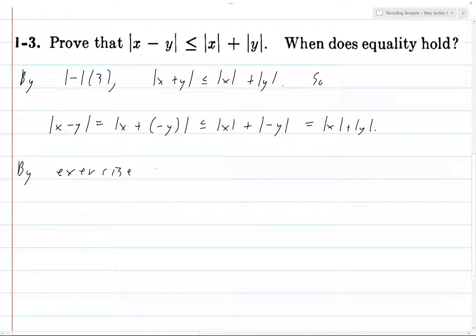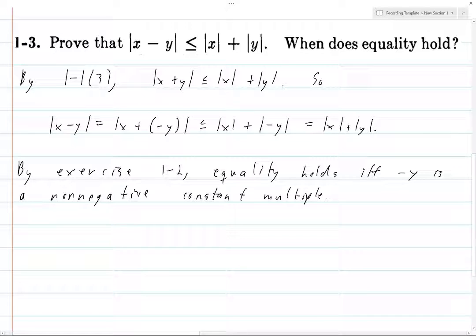By exercise 1-2, when does equality hold? Equality holds if and only if -y is a non-negative constant multiple of x. Hence |x - y| equals |x| + |y| if and only if y is a non-positive